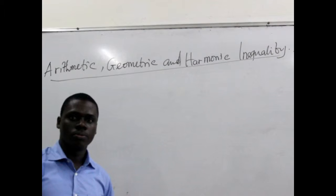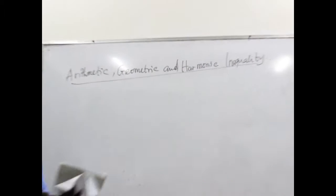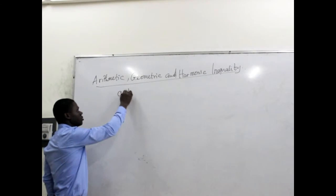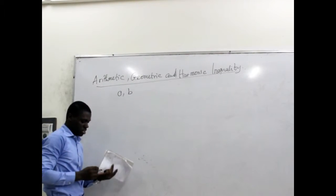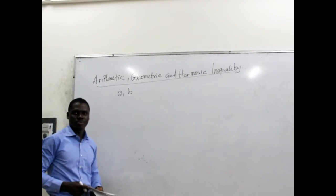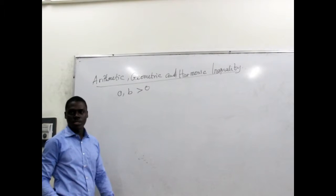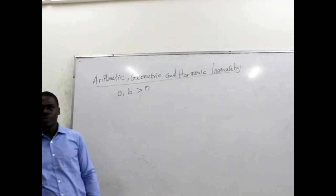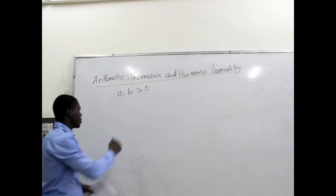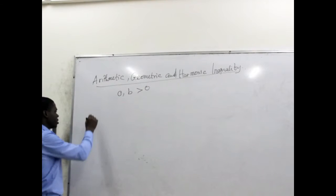We realize that we can find arithmetic mean for a given set of numbers. For instance, if we have A and B as any given numbers, we want to put some restrictions on them — let's say that they are non-negative values. So we can actually find the arithmetic mean, which we will represent like this.